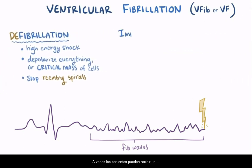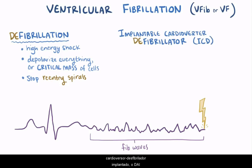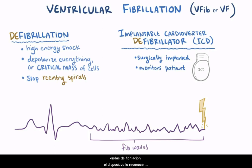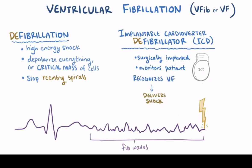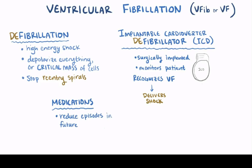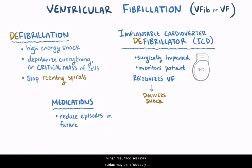Sometimes patients might be given an implantable cardioverter defibrillator, or ICD. ICDs are surgically implanted and can constantly monitor a patient's ECG. If the patient's ECG suddenly breaks down into fib waves, the device recognizes it as VF and promptly delivers a defibrillating shock. Patients might also be given medications following a VF event to help reduce the likelihood of episodes in the future. Although ICDs and medication can't fix the underlying condition that ultimately leads to VF, they have been shown to be very beneficial and effective at improving survival.